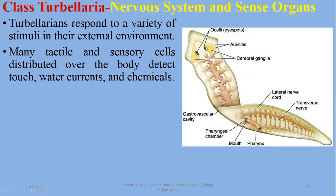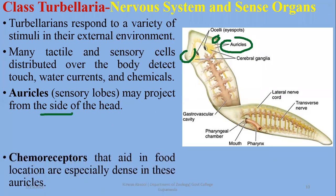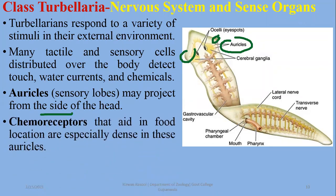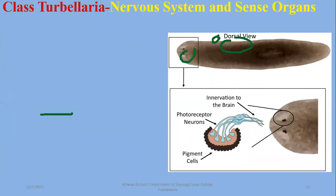There are many other stimuli detected as well. Tactile or sensory cells are distributed throughout, detecting chemical, water current, or touch stimuli. Auricular sensory lobes project out from the sides of the head. Within these chemoreceptors, they help with food location, and the auricular lobes, which are chemoreceptors, are more concentrated.